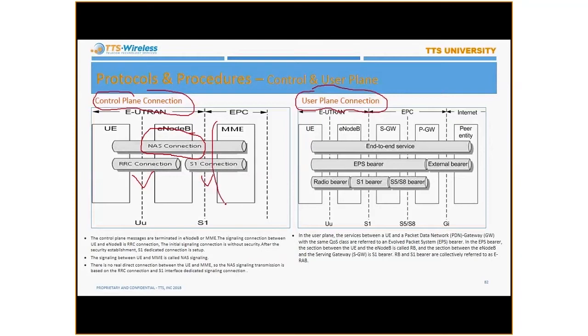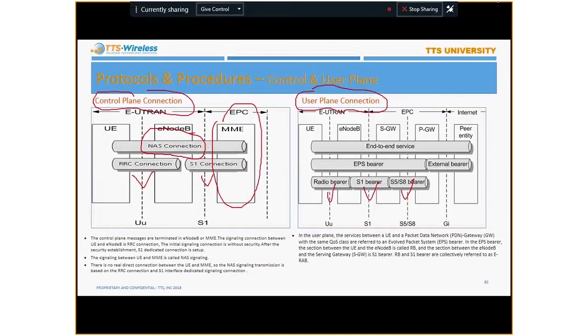However, for the user plane, you have radio bearer, S1 bearer, S8 bearer, EPS bearer, external bearer, and end-to-end service bearer. So maybe you guys are confused, but there are a lot of different ways of explaining how the messages are going between or among the nodes. I mean, you have channel, you have bearer, you have layers. There are different ways.